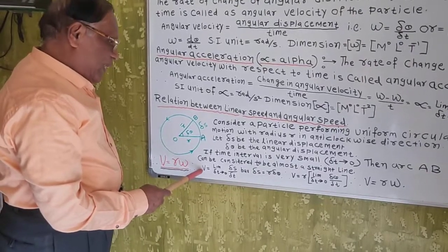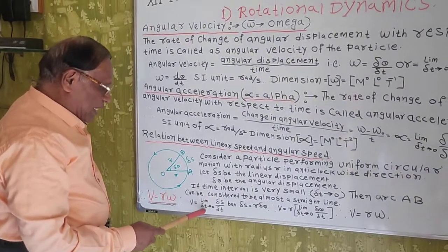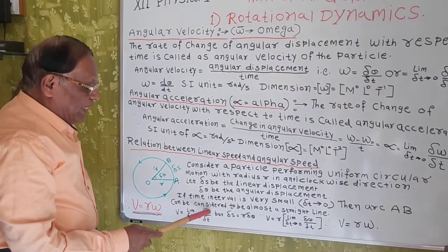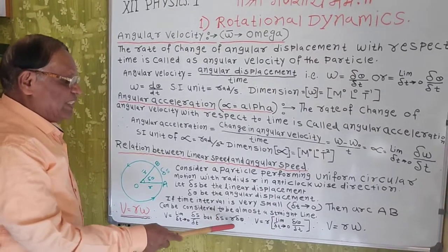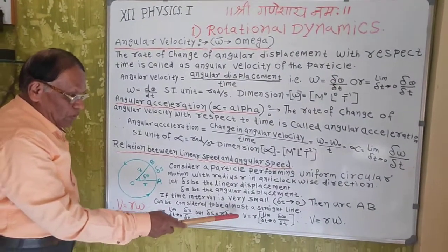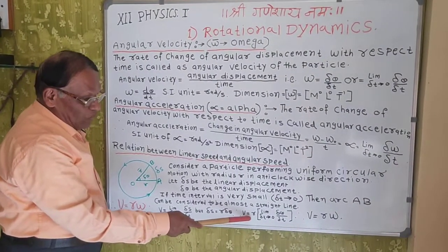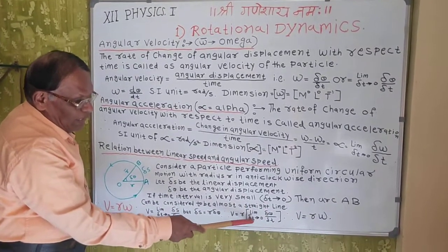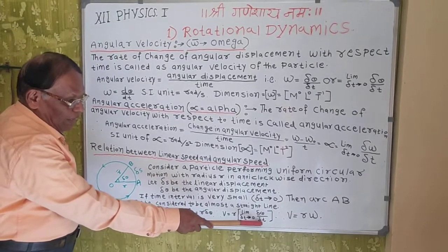Therefore, we write V equals the limit as delta t tends to 0 of delta S upon delta t. But delta S equals R into delta theta, so the velocity formula becomes V equals R multiplied by the limit as delta t tends to 0 of delta theta by delta t.